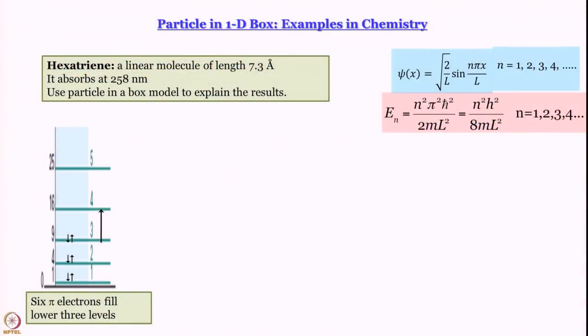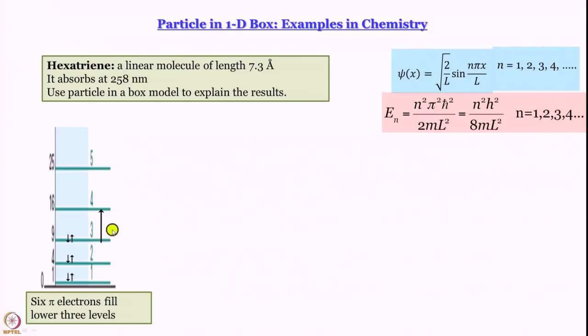We can only comment on the validity of the model after looking at the calculated results compared to the experimental result of 258 nanometers. Right now we are just testing it out. The molecular orbital energy levels are approximated by 1D box energy levels in hexatriene. There are 6 pi electrons, each MO accommodates 2, so n=3 is the level of origin of any upward transition, and the lowest energy transition takes it to level 4, since odd-to-even transitions are allowed.